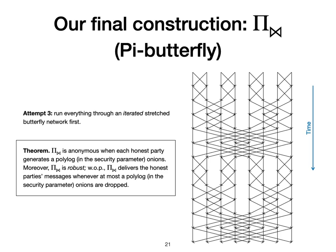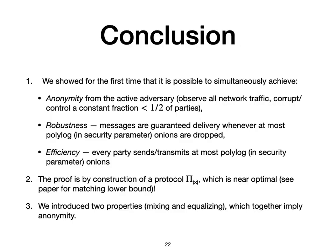We can show that Pi Butterfly is anonymous when each honest party generates a polylog number of onions, and moreover it is robust, meaning messages are still delivered when the adversary drops at most a polylog number of onions. In conclusion, we showed that it is possible to simultaneously achieve anonymity from the active adversary, robustness, and efficiency. We did this by constructing Pi Butterfly, which we also show to be nearly optimal. To prove anonymity, we introduced two new properties — mixing and equalizing — which we showed imply anonymity.